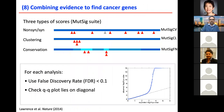We improved the method — not only MutSig-CV, which counts the number of mutations in the gene, we also added MutSig-CL, which looks at the clustering of mutations. If there are not many mutations but all of them are in the same amino acid, that is unlikely by chance, and this is another indication that these are driver mutations.